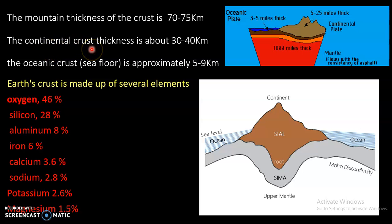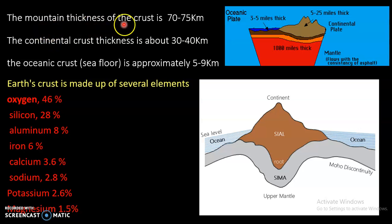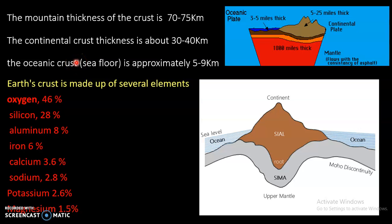The continental crust thickness is about 30 to 40 kilometers because this crust is present in the atmosphere — it is the upper layer of the Earth's crust. The oceanic crust is present below the ocean surface, hence it has a thickness of 5 to 9 kilometers. The mountain thickness of the Earth's crust is 70 to 75 kilometers because of the mountain ranges. There are two types of crust: continental crust, which is present above the Earth's surface, and oceanic crust, which is present below the ocean surface — also called the seafloor.